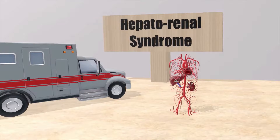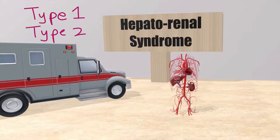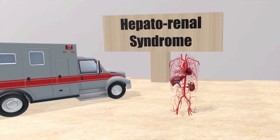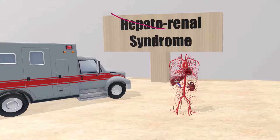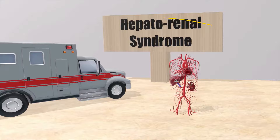I've simplified things in this video just a bit. For example, I didn't distinguish between type 1 and type 2 hepatorenal syndrome. But the truth is, both type 1 and type 2 share these three characteristics: altered liver function leading to abnormalities in circulation — specifically in the splanchnic circulation — which overactivates the kidney RAS system, leading to kidney failure.